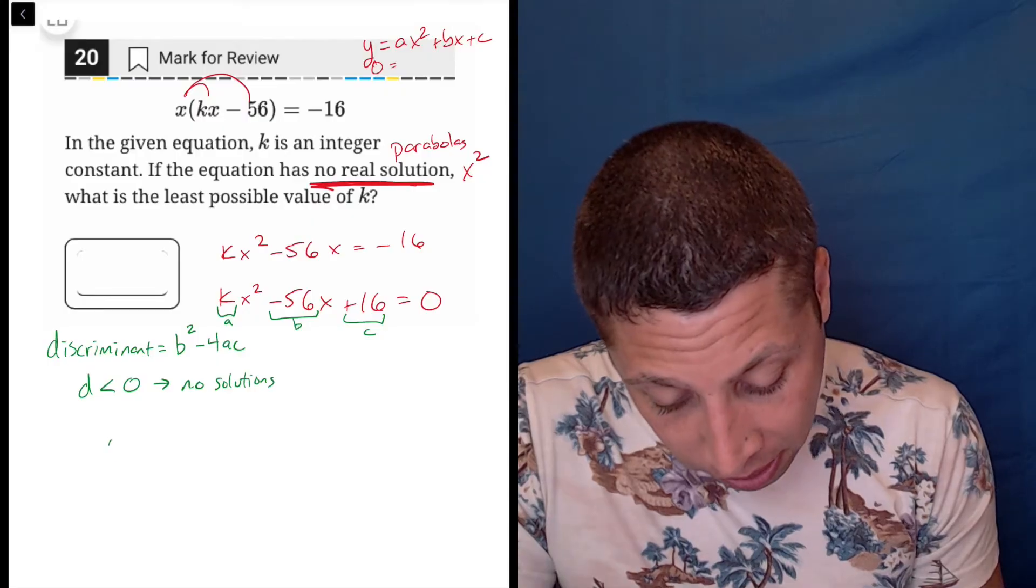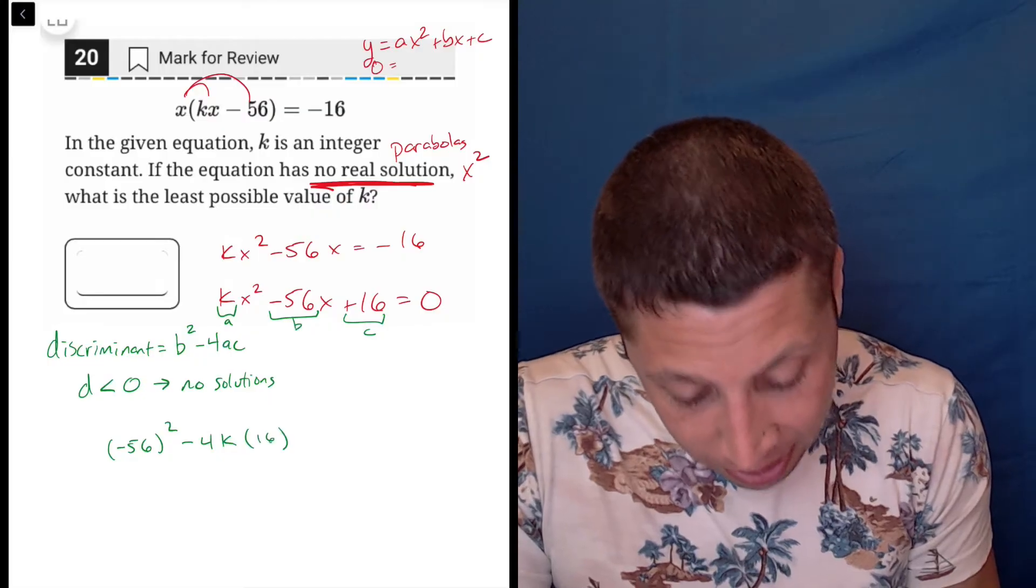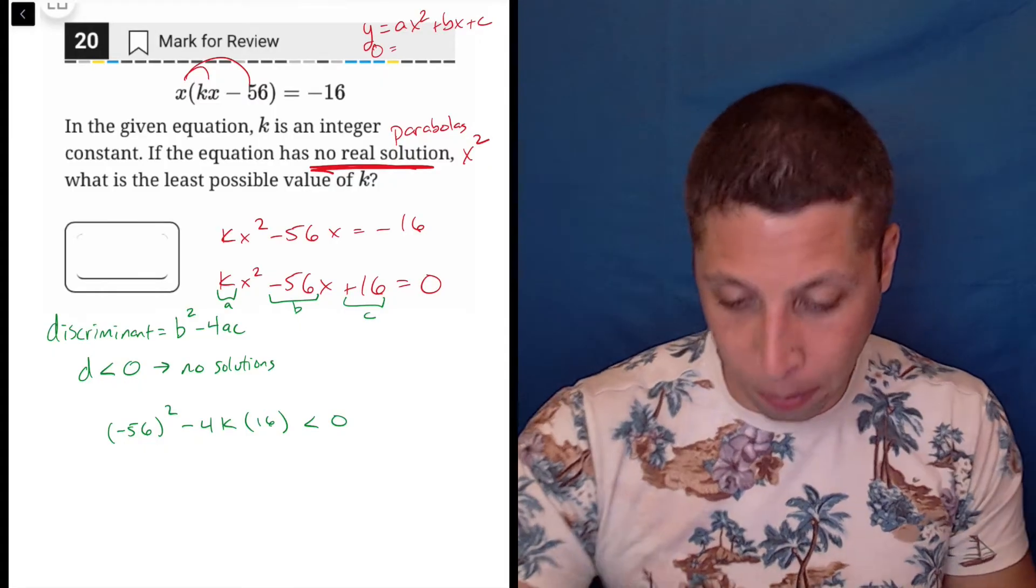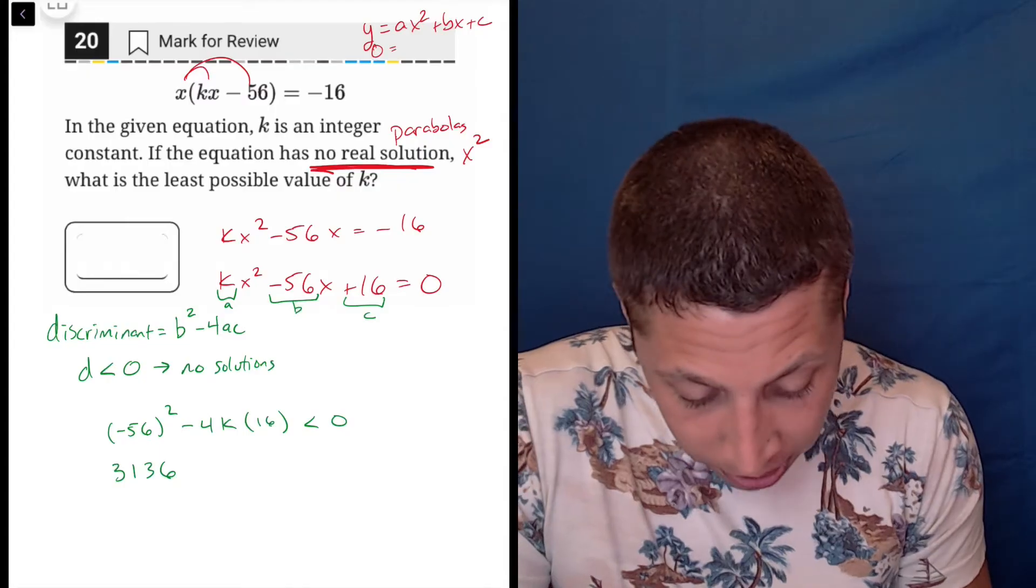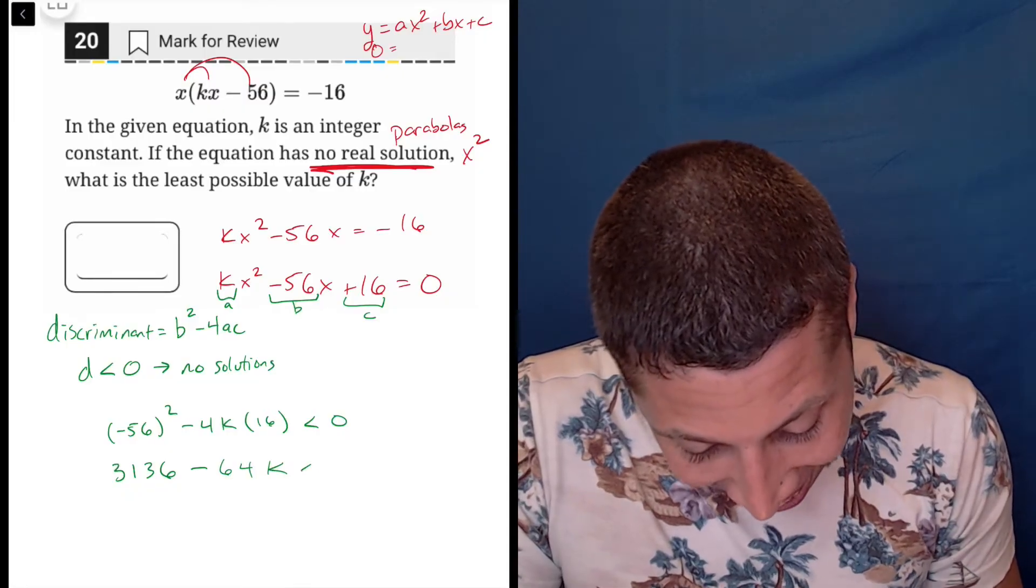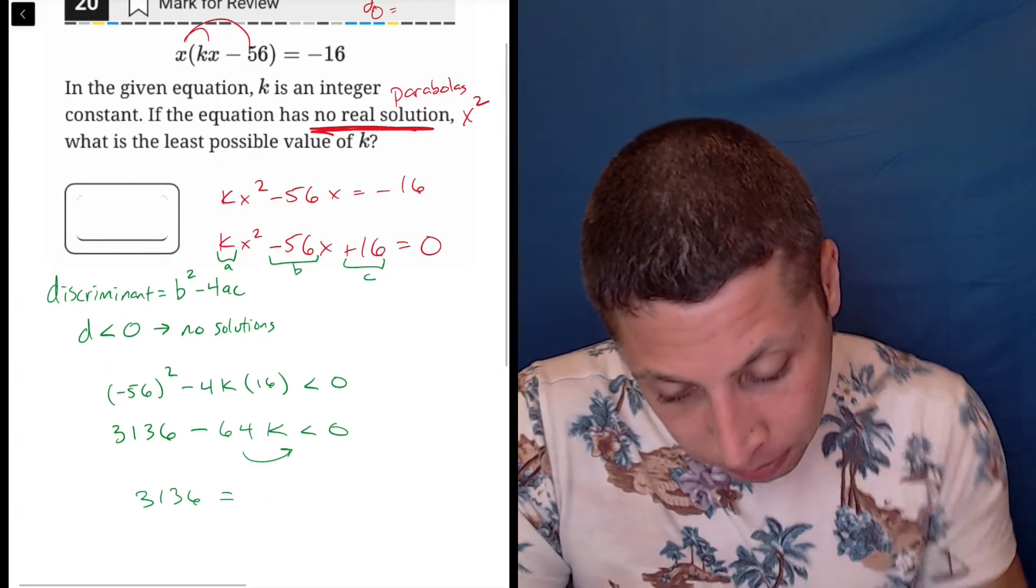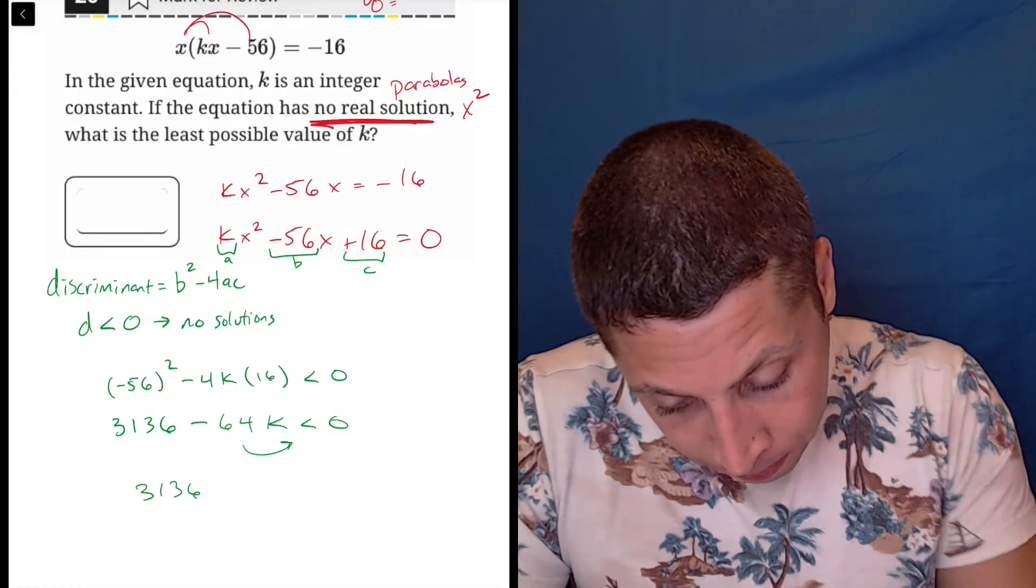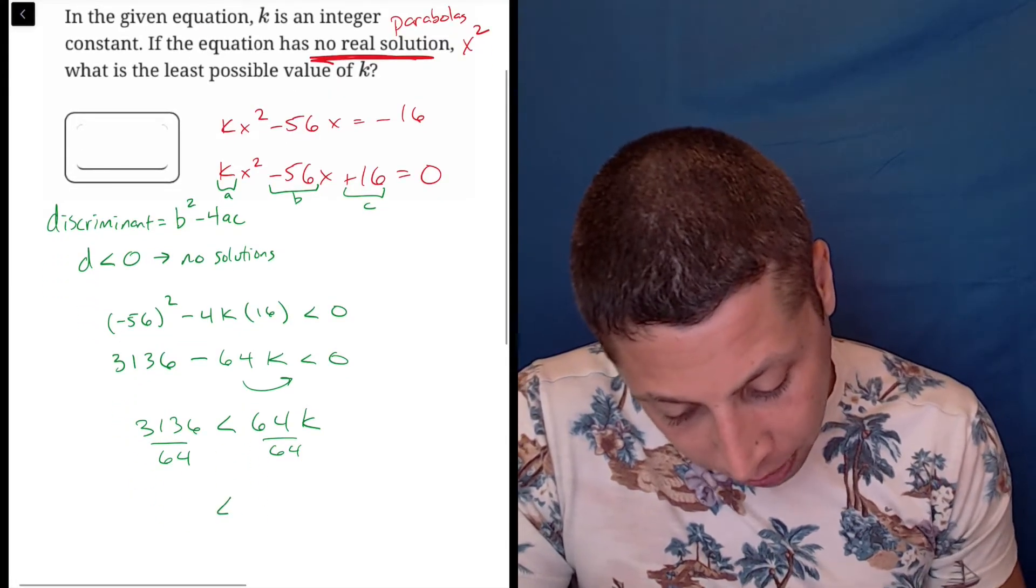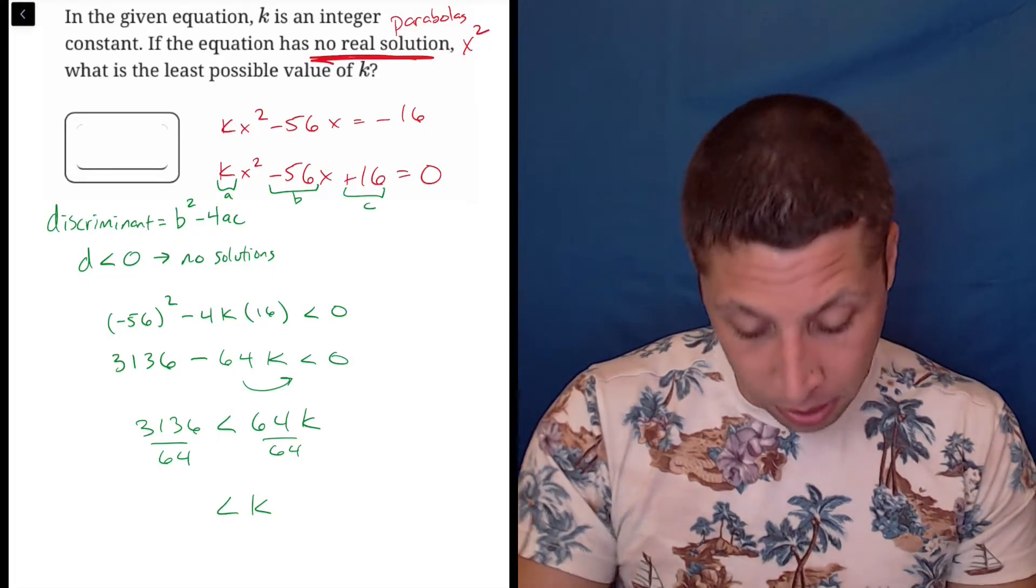We just want to see when is b squared minus 4ac going to be less than zero. So negative 56 squared minus 4 times k times 16 is less than zero. That's 3,136 minus 64k is less than zero. I'm going to add this over, so we're going to get 3,136 is greater than 64k, and I'm going to divide by 64 to solve for k. So k has to be greater than 3136 divided by 64, which is 49.